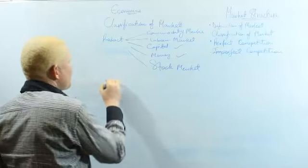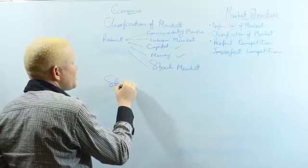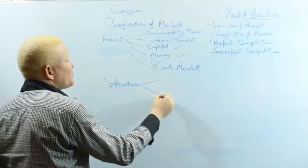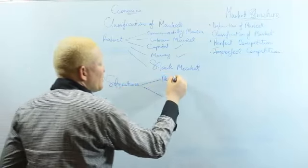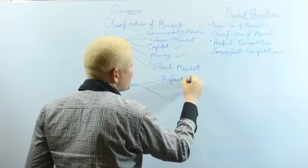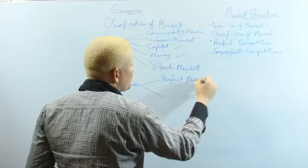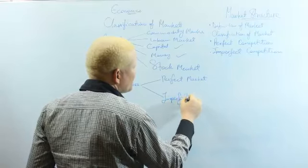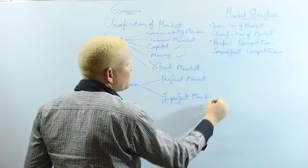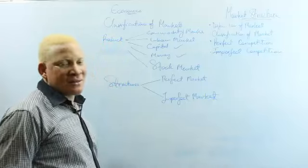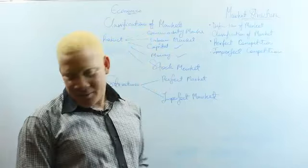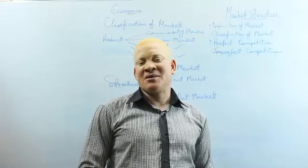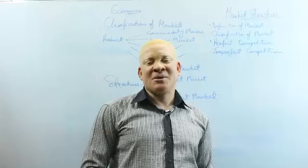On the other hand, we have markets classified according to structure. We have two basic market structures. The first one is the perfect market, or what we call perfect competition, and imperfect markets. This is going to make the crux of what we are discussing today. At this time, take a look at the questions on your screen and we'll be right back.